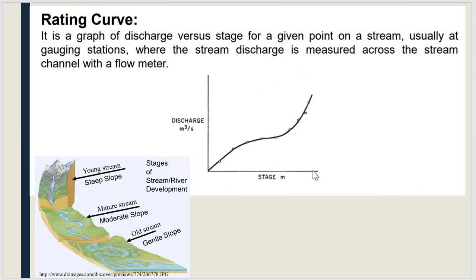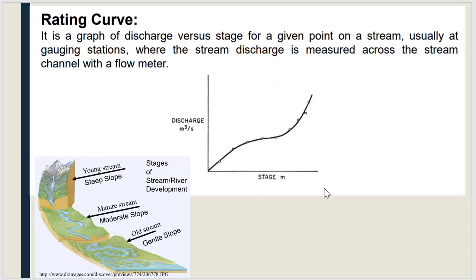Next are rating curves, prepared by noting the stages and discharge in a river or stream. The stage is plotted against discharge. A stream has three stages: the young stream (steep, origin area), the mature stream (moderately sloped, middle portion), and the old stream (plain area). Each stage has a different discharge value. The rating curve is prepared according to these stages, and by checking the stage, discharge can be calculated by drawing straight lines.